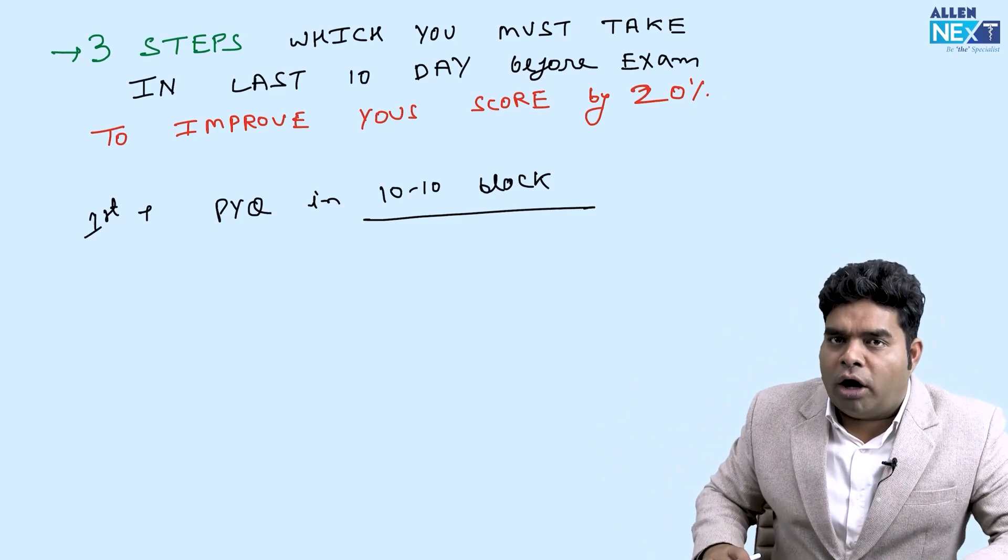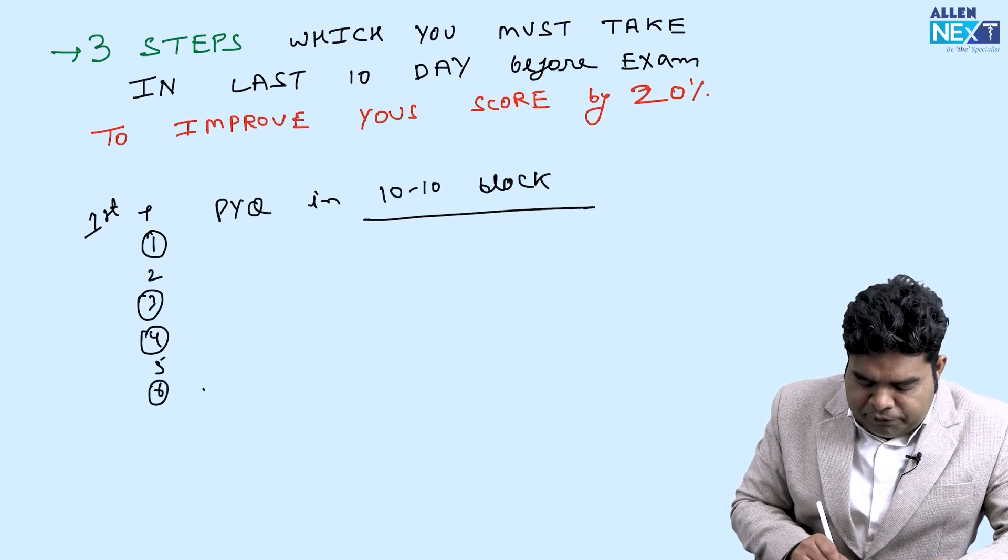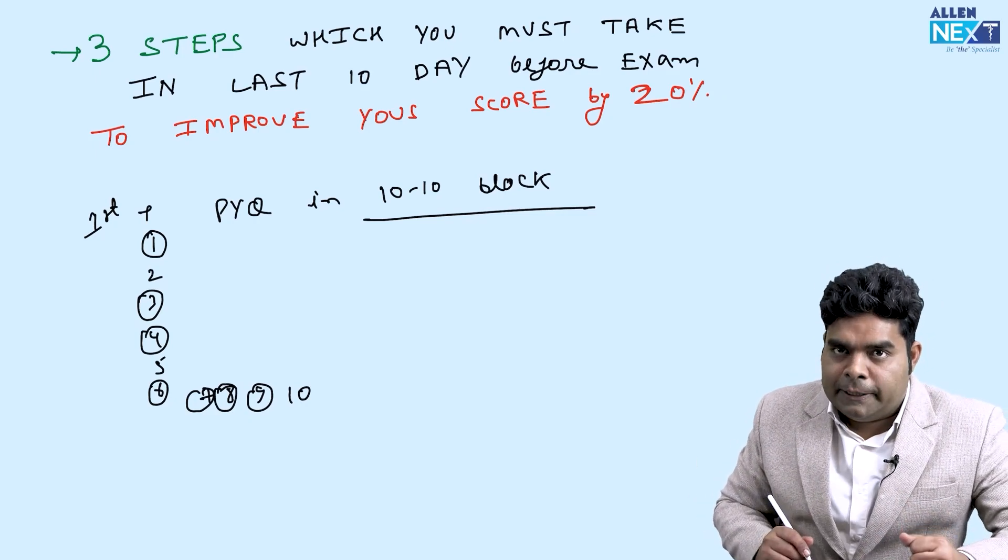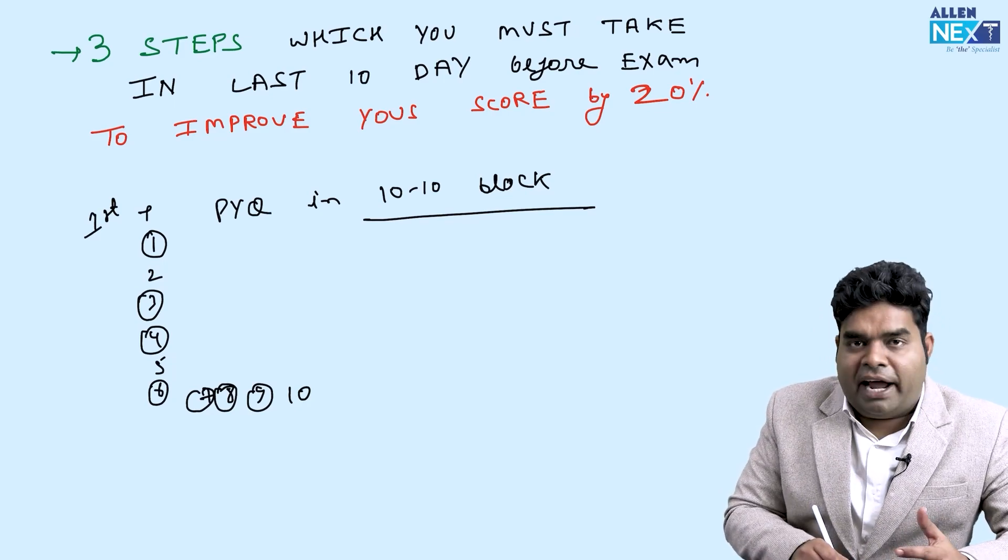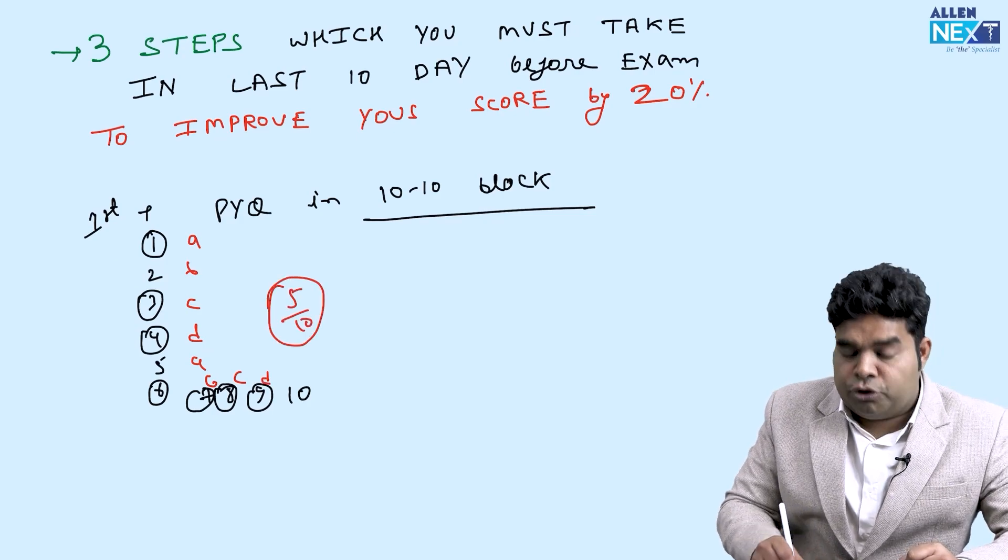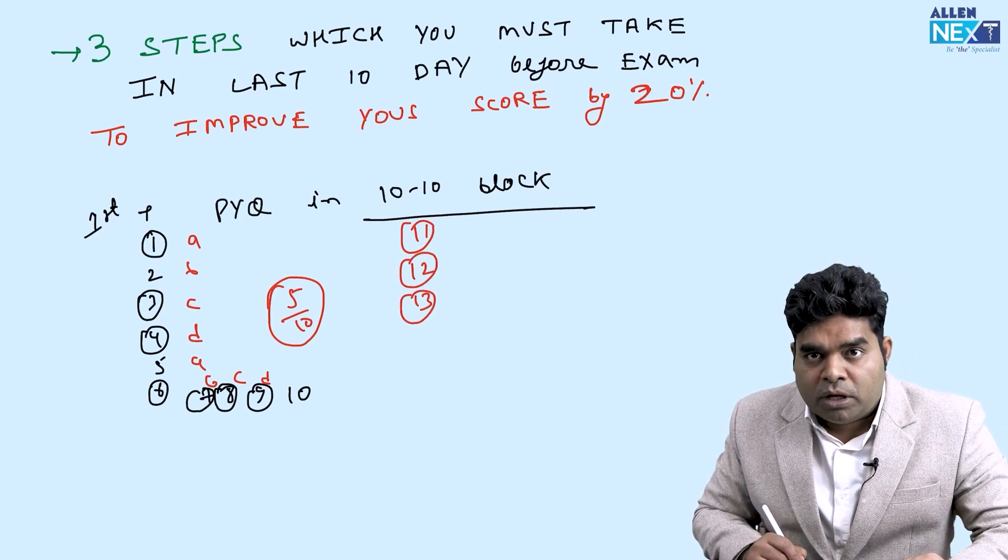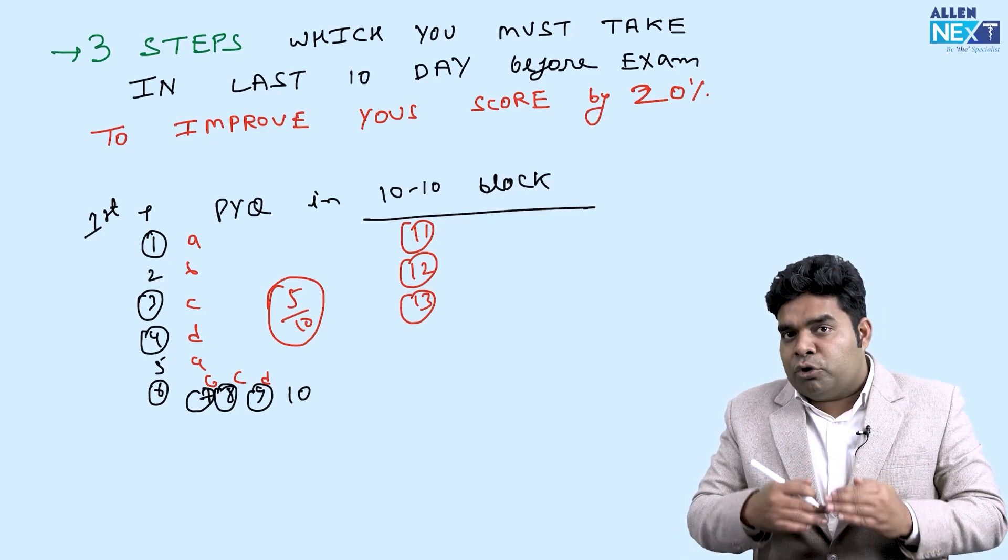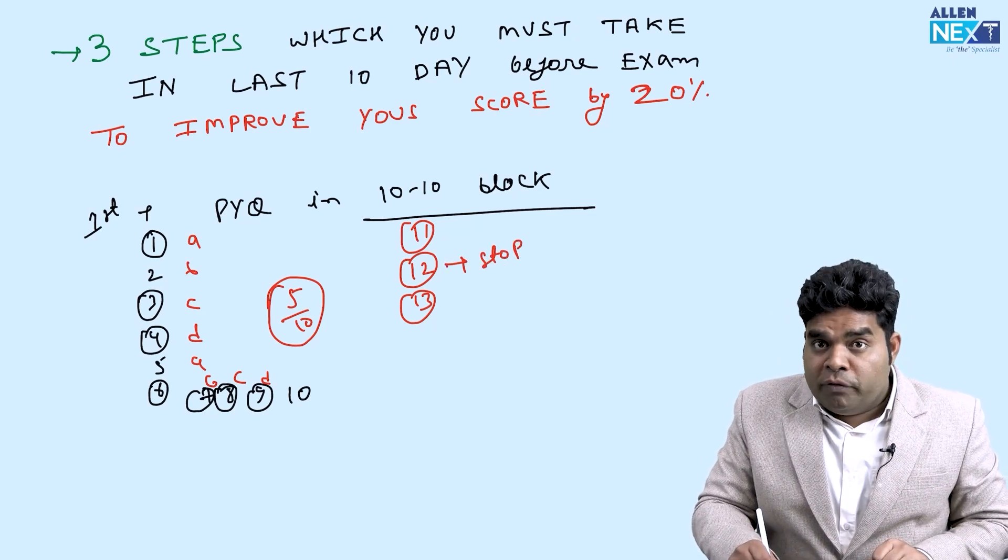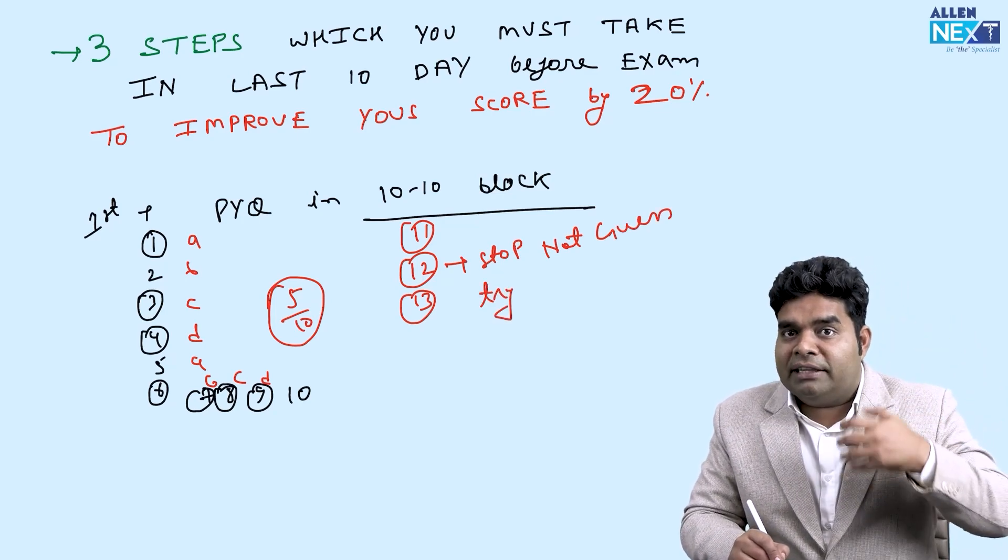So what is this 10-10 block thing I am saying? Whenever you are attempting previous questions from your app or from your book, after every 10 questions you should try to find out how many you have done correctly. Let's say out of 10 questions if you did 5 questions correct in the first 10 questions, then when you are trying to do the next 10 block you would always try to score more than 5. This is like an inner challenge for you. To score more than 5 you will stop, you will not guess, and you will try to bring the answer back from your memory and then answer.